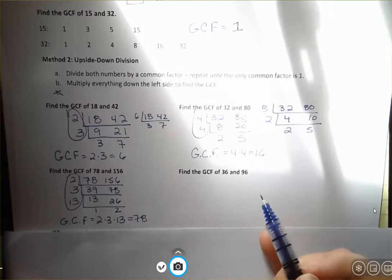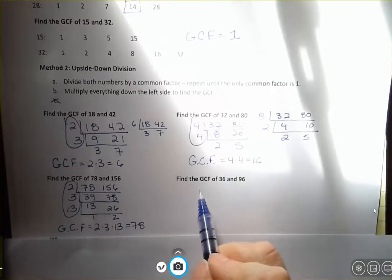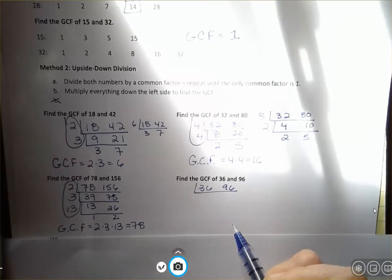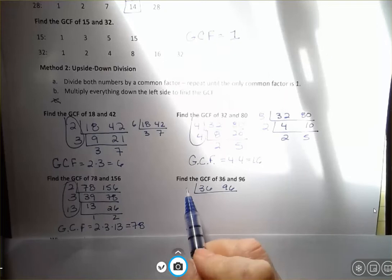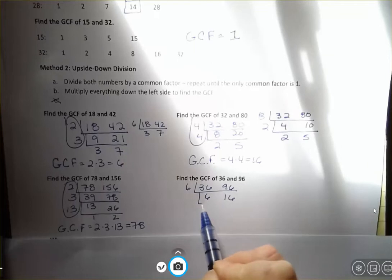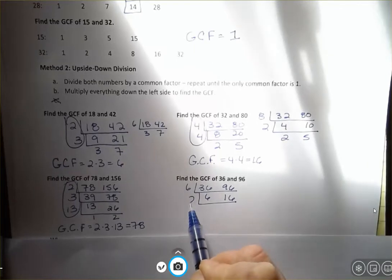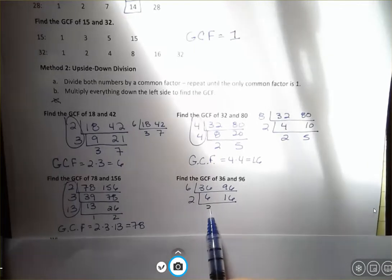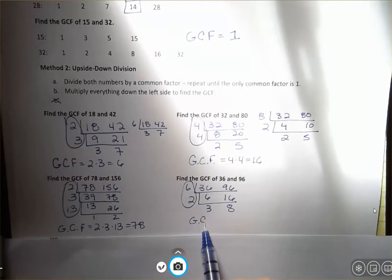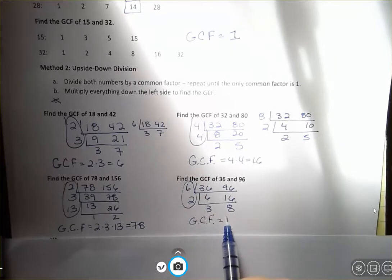And finally, 36 and 96. And I'm going to start off with, let's say we start off with six. Six goes in there six, and six goes into 96 16 times. And then I could say two, two goes into six three times, two goes into 16 eight times. There's no more common factors. My GCF is 12.